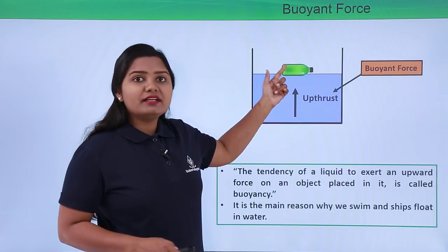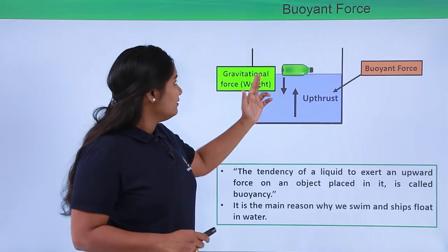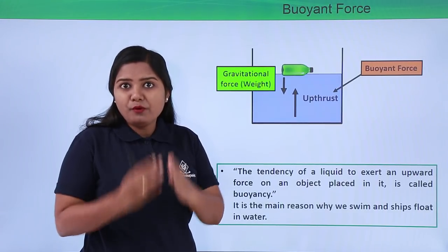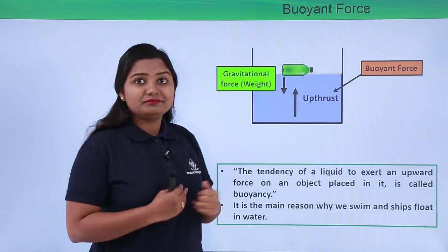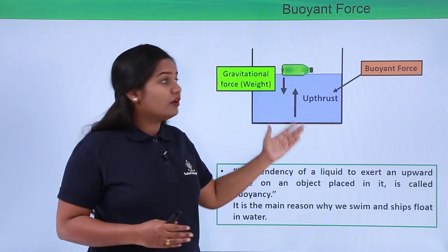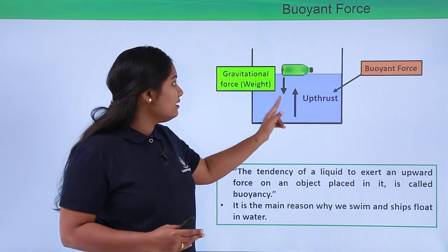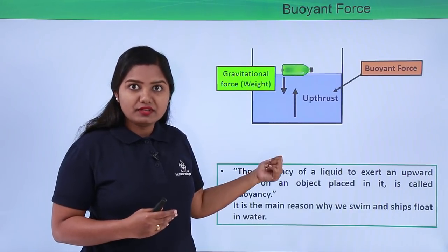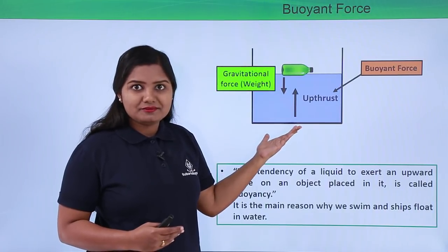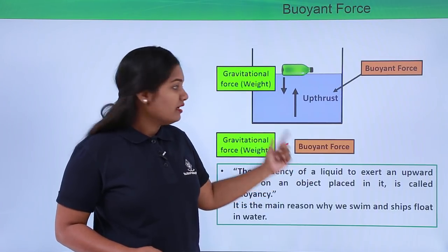This bottle has its own gravitational pull — the weight of the bottle acts in the downward direction. But this downward force is not enough to move it downward because the upthrust that water offers is greater than the gravitational pull of the bottle. Whenever there is an unbalanced force, the object moves in the direction of the greater force. Here, the upthrust is greater than the weight of the bottle, so the bottle moves upward. Whenever the gravitational force or weight of an object is less than the buoyant force offered by the fluid, the object floats.